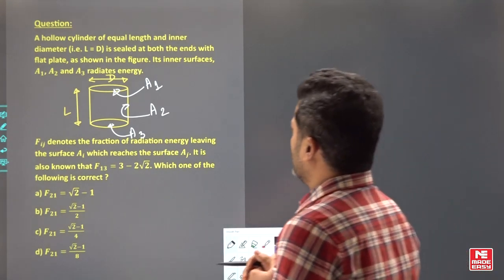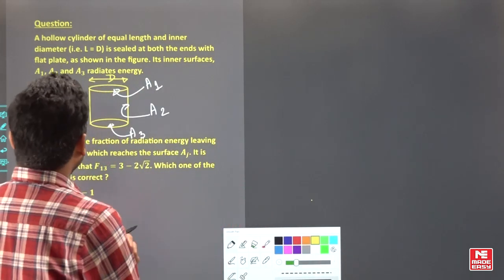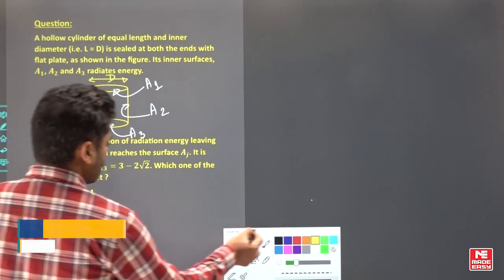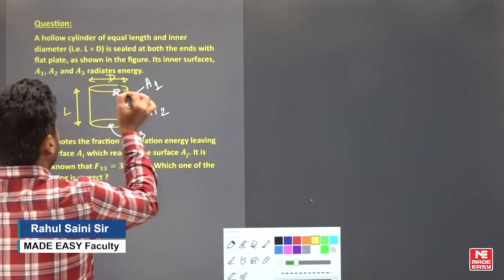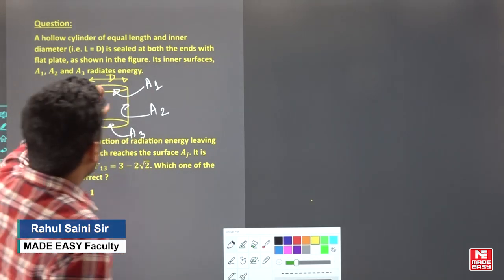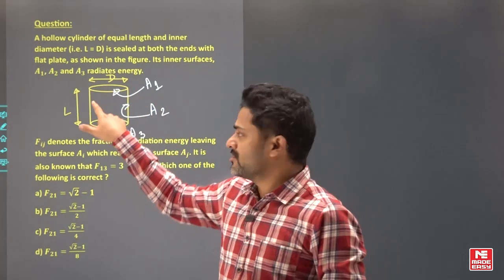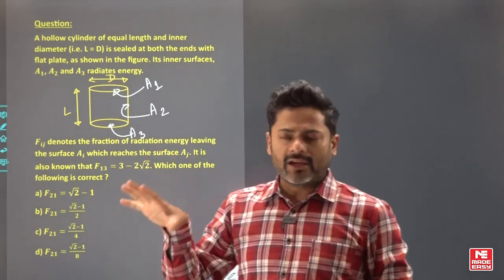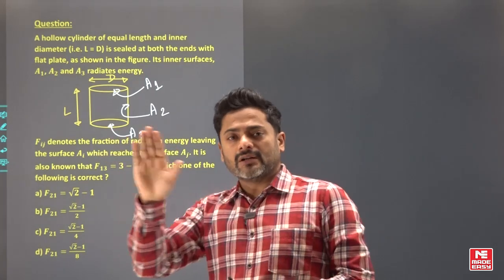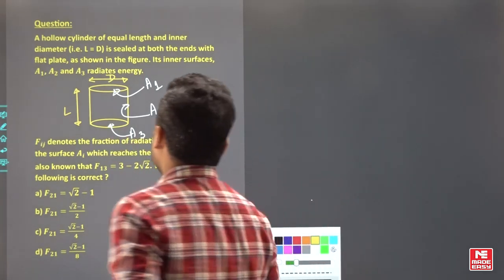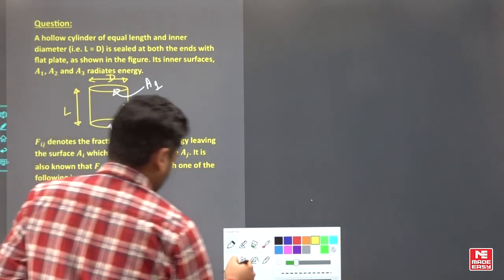A hollow cylinder of equal length and inner diameter, L equals D, is sealed from both ends. The top circle area is A1, bottom is A3, and the curved surface is A2. Its inner surfaces A1, A2, A3 radiate energy.